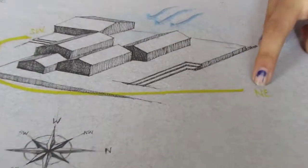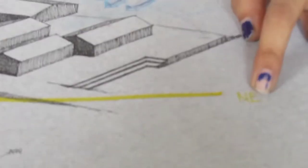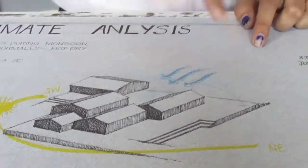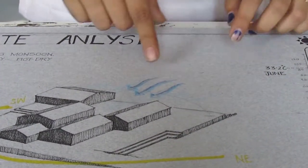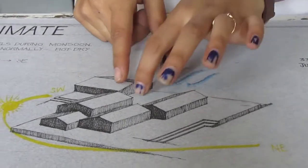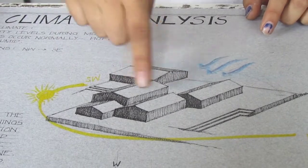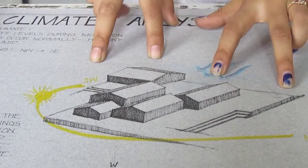The sun path is from northeast to southwest from the south side. The winds are coming from the northwest, which is creating a very nice ventilation across the whole complex that I have made.